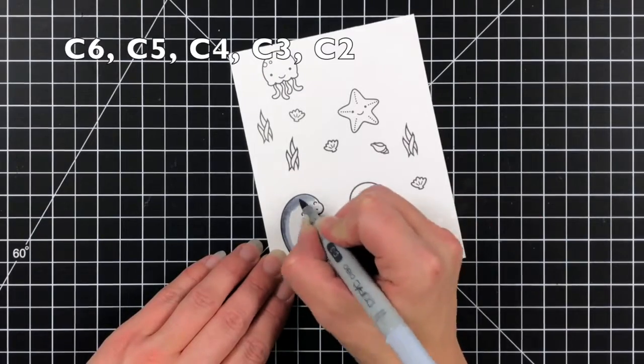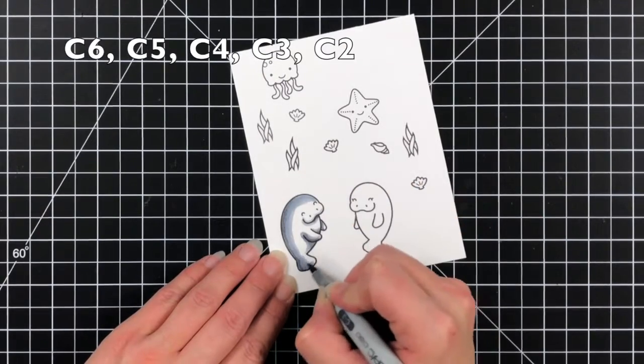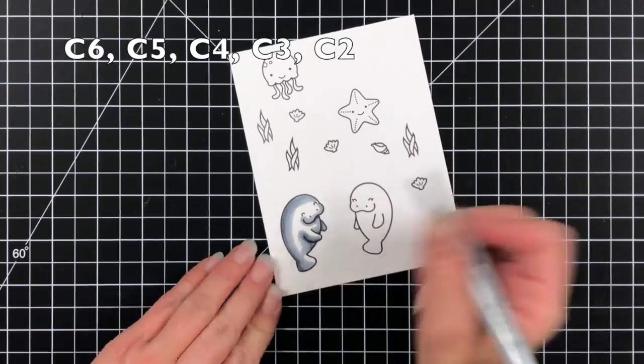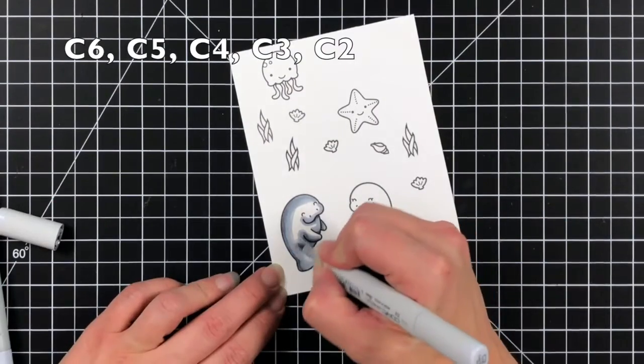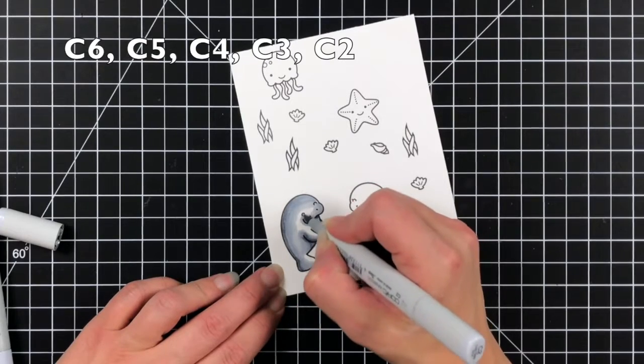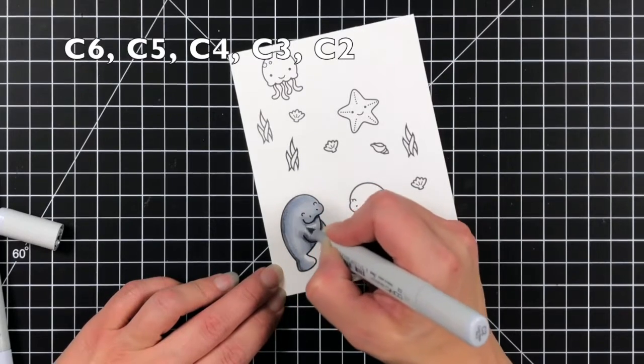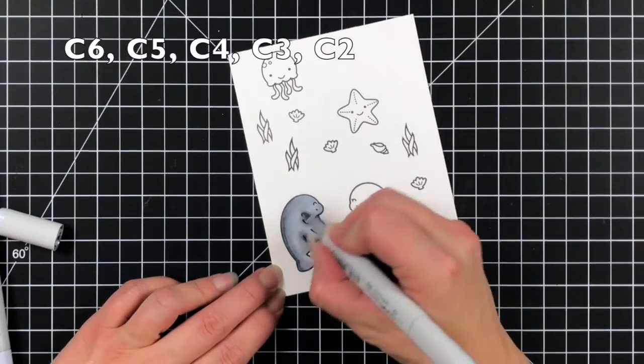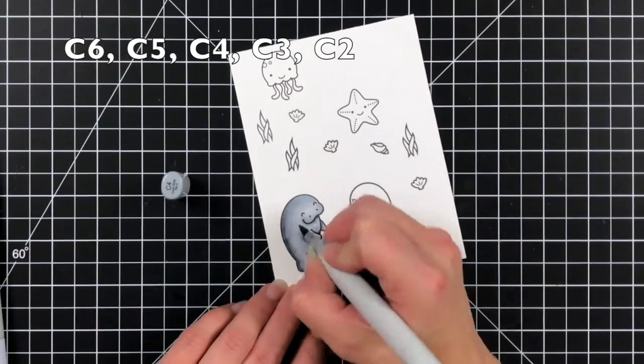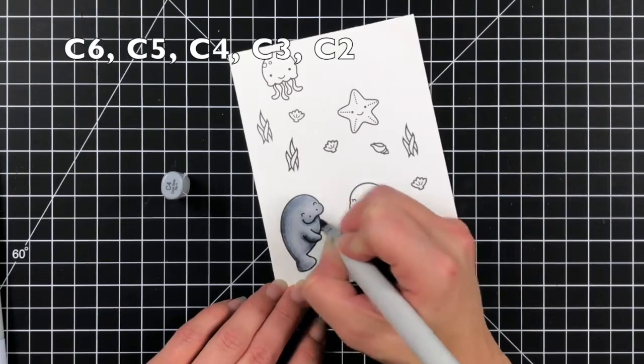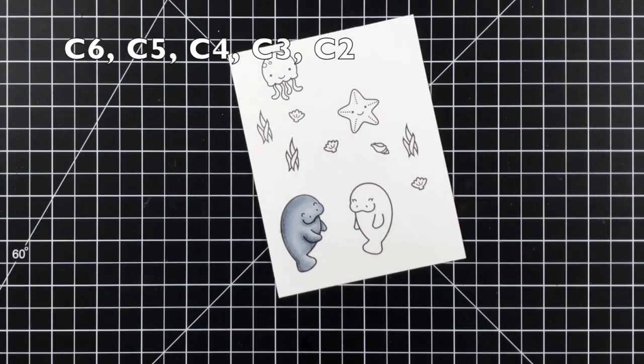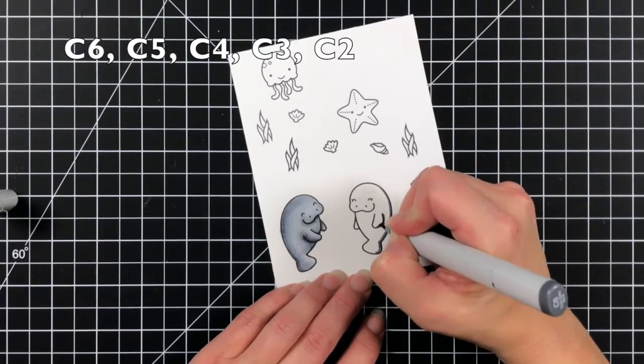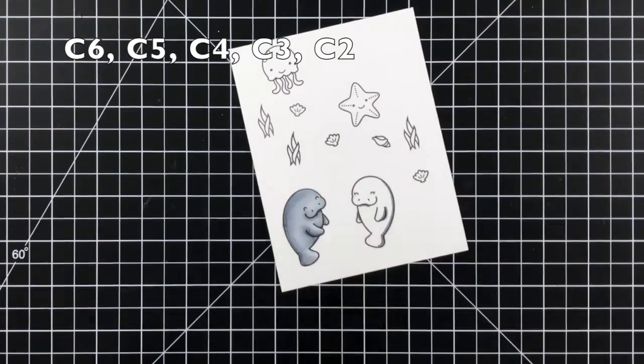I'm going to keep the lightest area to the right which is the direction he's facing and I started off with my C6 as the darkest color and then I will blend out with C5, C4, C3, and C2. I added the darkest areas to the very back of the manatee on the left hand side, a little bit of shadow under the flipper and just a little bit underneath the mouth or the muzzle.